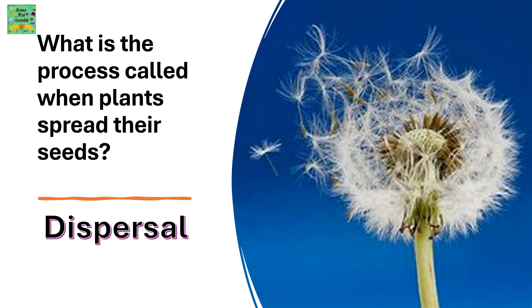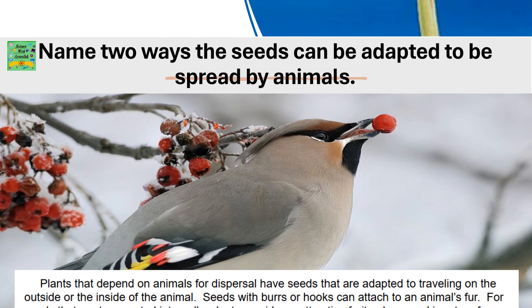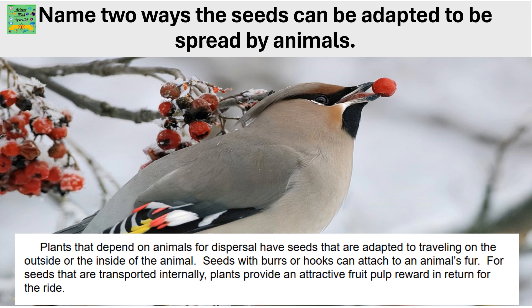What is the process called when plants spread their seeds? It's called dispersal. Plants that depend on animals for dispersal have seeds adapted to traveling on the outside or inside of the animal. Seeds with burrs or hooks can attach to an animal's fur. For seeds that are transported internally, plants provide an attractive fruit pulp reward in return for the ride.